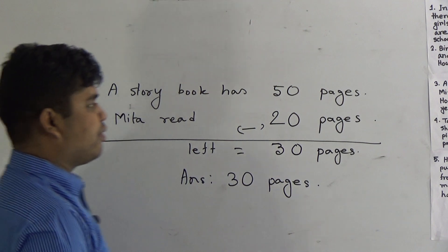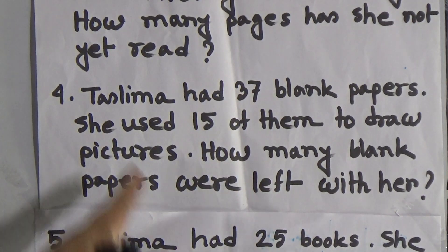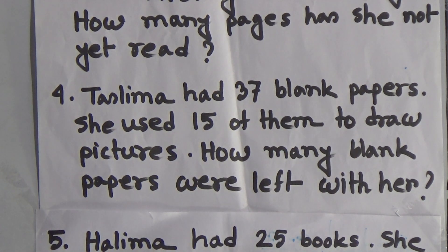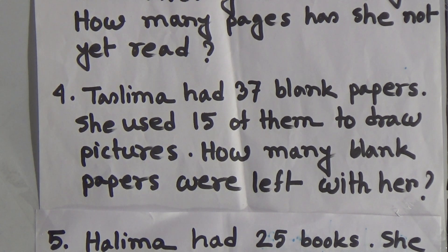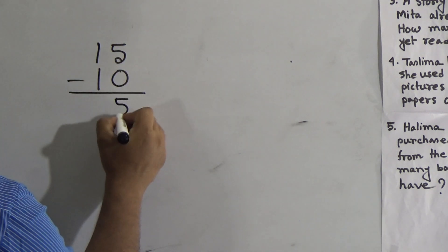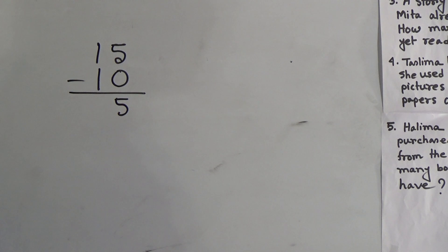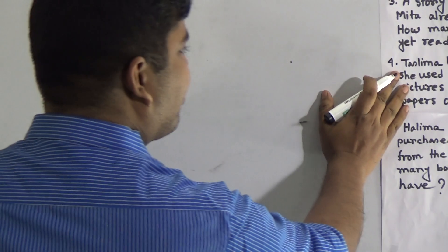Next, we shall solve question number four. Read the question first, then make a plan. Taslima had 37 blank papers. She used 15 of them to draw pictures. How many blank papers were left with her? Suppose you have 15 pages and used 10 to draw — how many are left? We do subtraction: 15 minus 10 equals 5. Five pages remain. Just like this, we solve question number four.